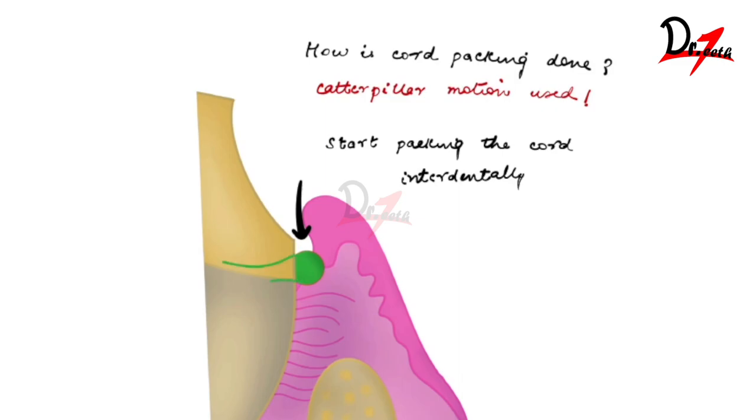Now let us suppose this is our cord and here I am making the cord packer. So this is our cord packer which is a non-serrated one, smooth one.